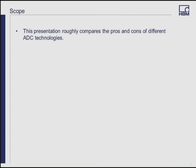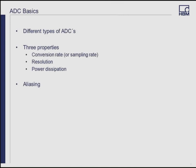This presentation compares the pros and cons of different ADC technologies. A lot of times when you're comparing different data acquisition systems, you see price differences and spec differences. The ADC technology behind that tends to drive those differences. We're going to look at three properties of an ADC: the conversion rate or sampling rate, the resolution, and the power dissipation. We'll also look at how this affects aliasing of signals.